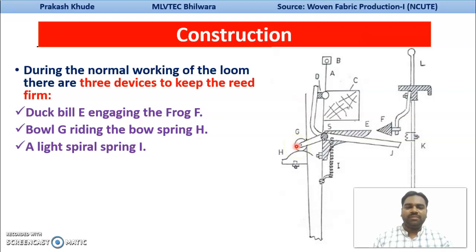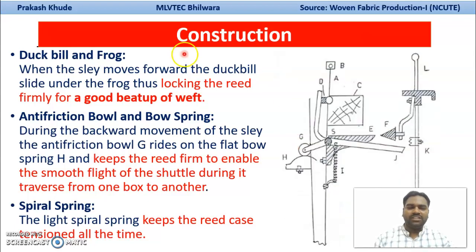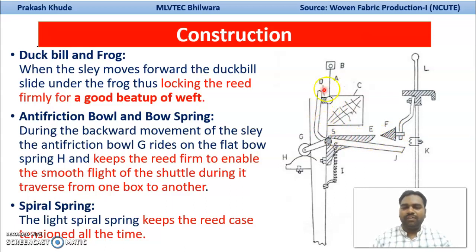What is the basic necessity of these three components during normal working of your loom? E is your duckbill and there is your frog arrangement. When the slay moves forward, during the slay forward movement, the duckbill slides under the frog arrangement, and that will cause the locking of your reed. That will improve your beat-up to the weft, because the duckbill goes below the frog, and due to that, the firming of your reed takes place. The reed will not be moved and proper beat-up has happened.